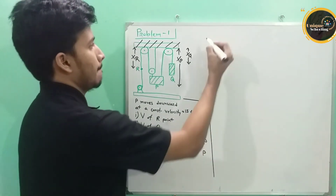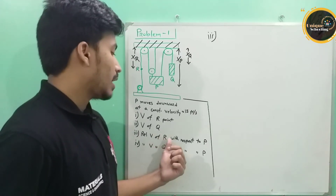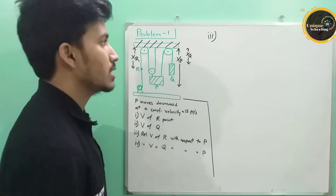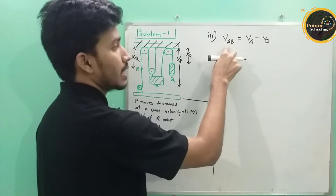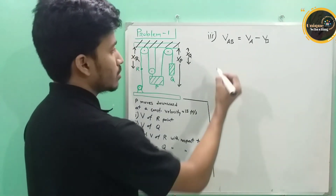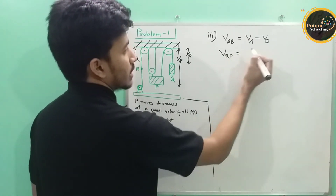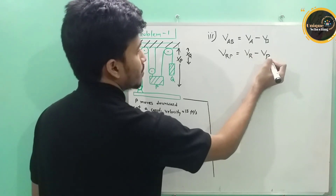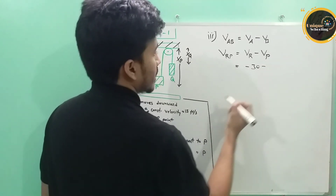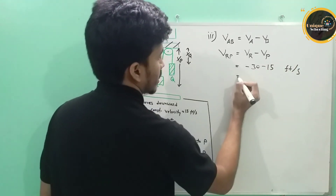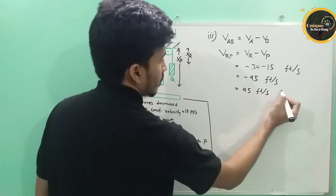Now we have three problems. The relative velocity of R with respect to P is given by VAB equals VA minus VB. So the velocity of R with respect to P is VR minus VP. VR is 30 feet per second upward and VP is 15 feet per second downward, giving a relative velocity of 45 feet per second upward.